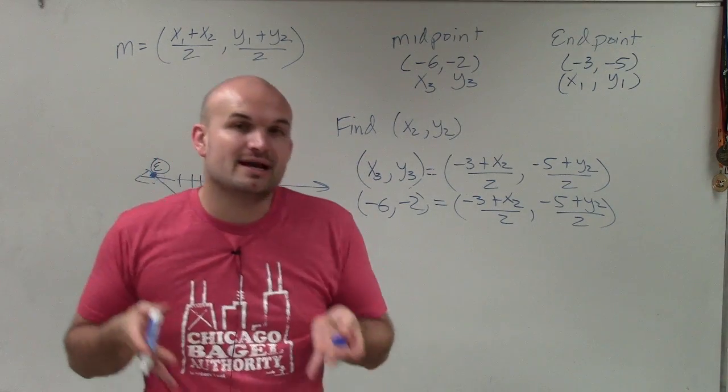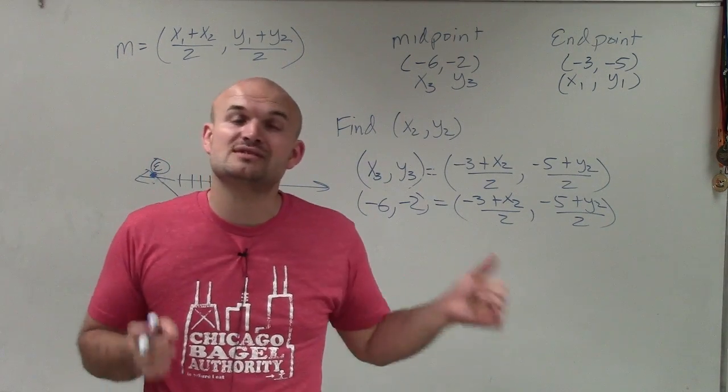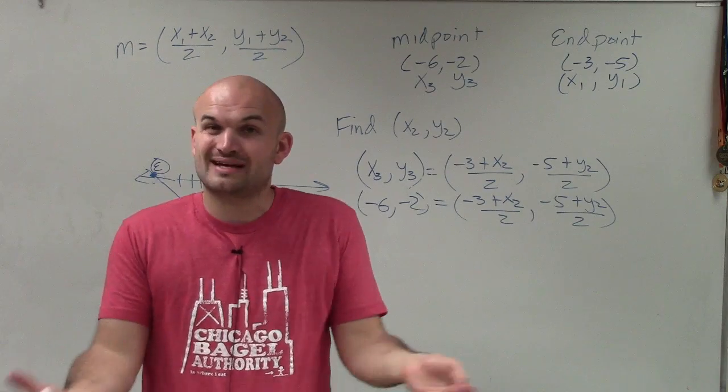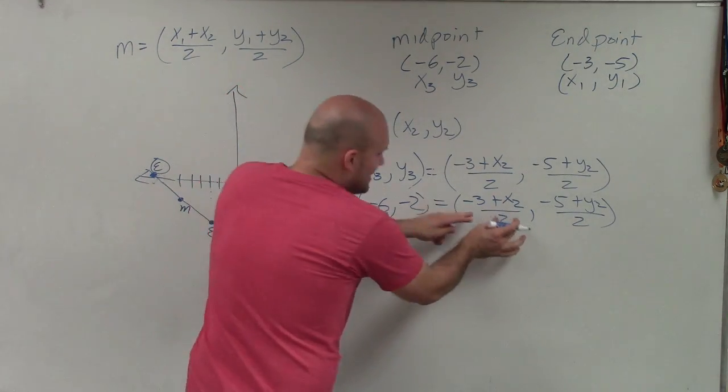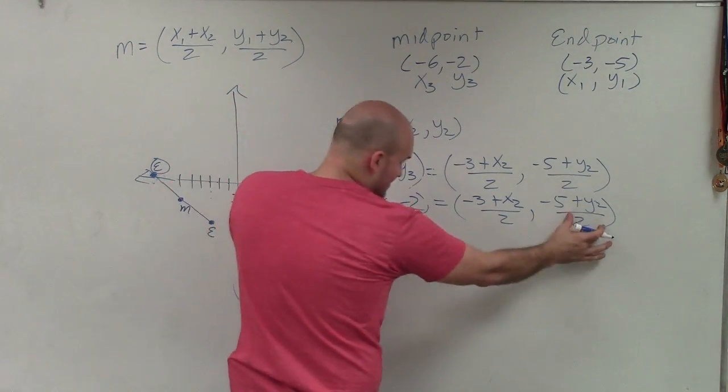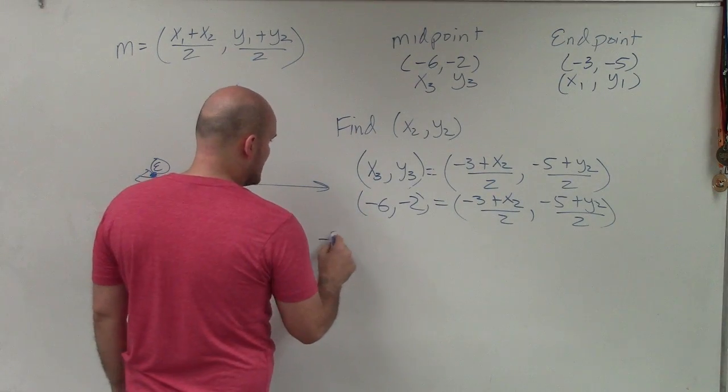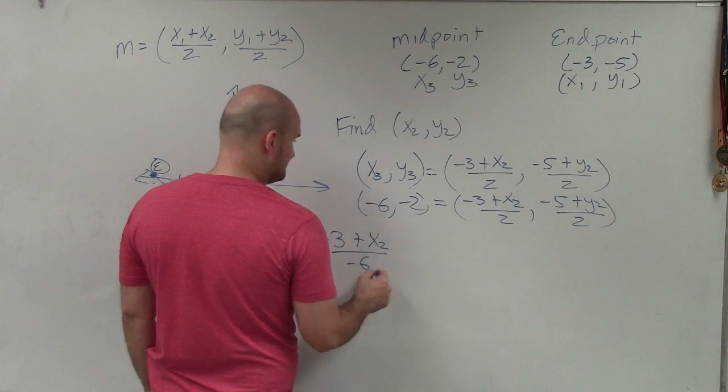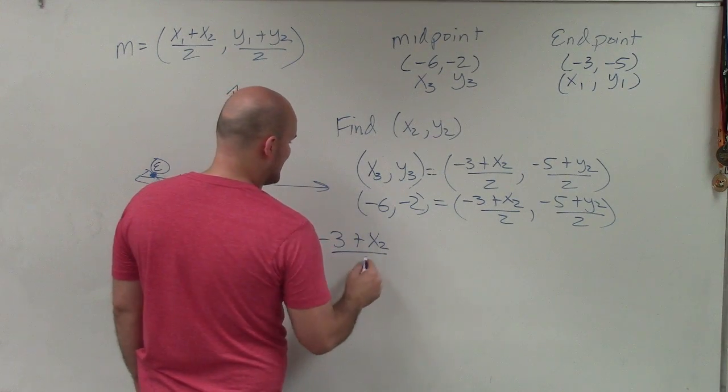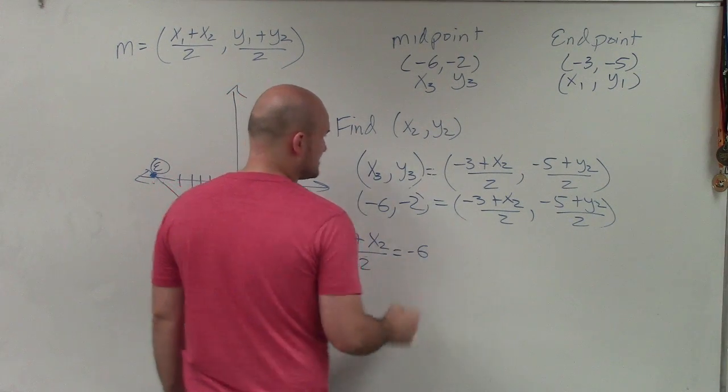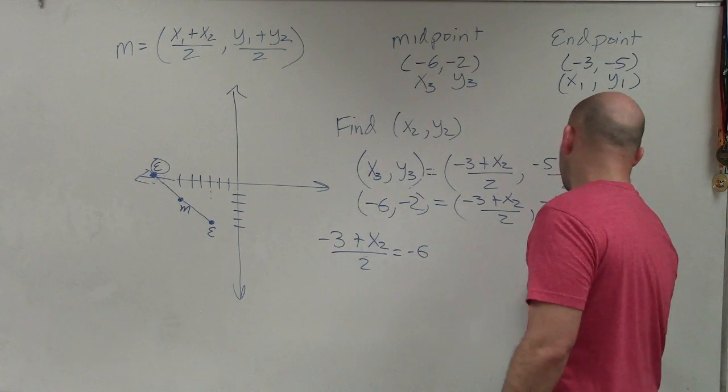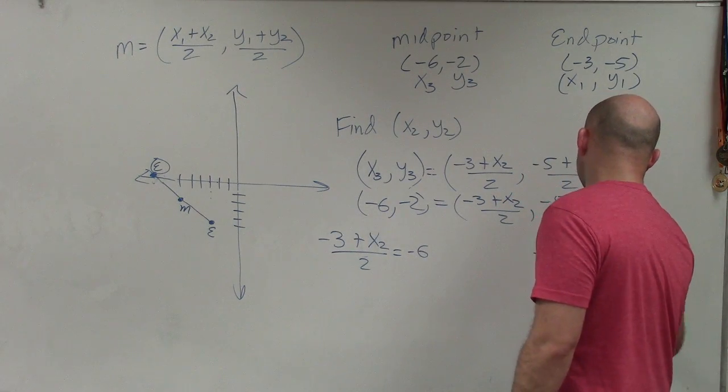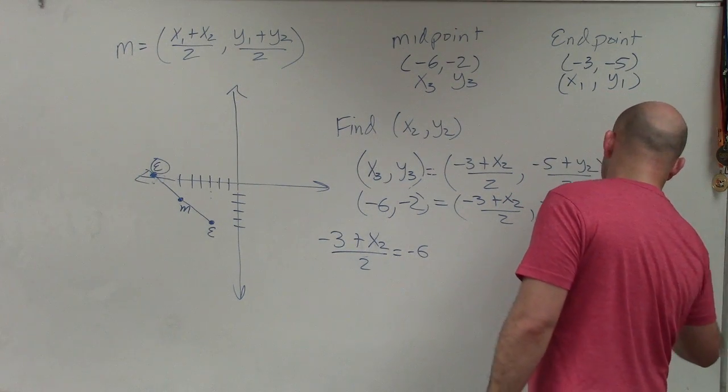So to solve for my y1 and x1, what I need to do is set two separate equations. Because obviously, to solve, we've got to have an equation. So I'm going to set this equal to -6, and this set equal to -2. So I have (-3 + x2) / 2 = -6. And then over here, I'll have (-5 + y2) / 2 = -2.